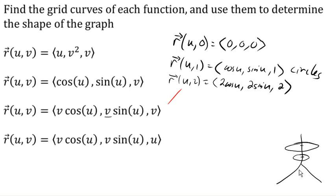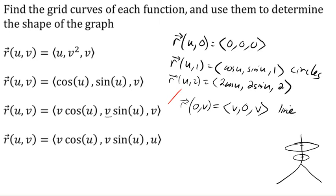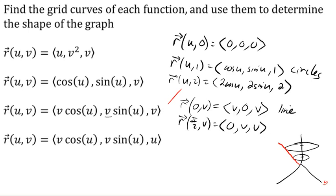Now let's plug in a value for u. Letting u equal 0: cosine of 0 is 1, giving (v, 0, v). This is a line where x equals z, y equals 0, and the x and z values increase together — a slanted line. If u equals pi/2, then cosine is 0 and sine is 1, giving a line increasing in y and z rather than x and z. For values of u in between, we get these other slanted lines.